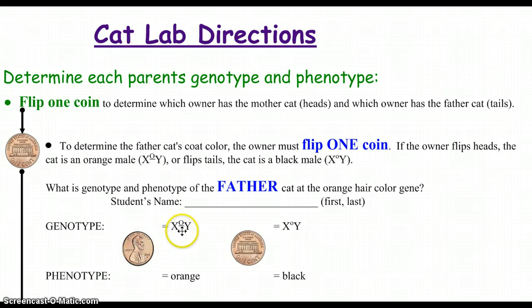The genotype, the X, Y with the O, those are genotypes. Pheno would be the actual color orange or black.